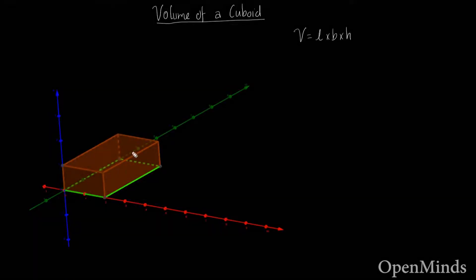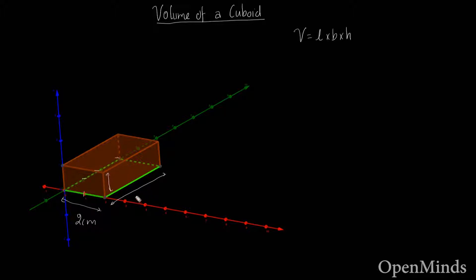Let's talk about the volume of a cuboid. The formula is simple: V = L times B times H. Here, L is the length, B is the breadth, and H is the height. In this case, the length is two centimeters, the breadth is three centimeters, and the height is one centimeter.